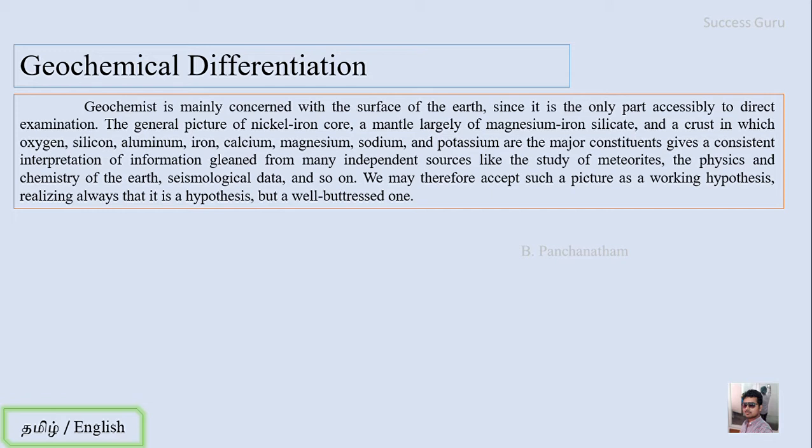aluminium, iron, calcium, magnesium, sodium and potassium are the major constituents. This gives a consistent interpretation of information gleaned from many independent sources like the study of meteorites, the physics and chemistry of the earth, seismological data and so on. We can therefore accept such a picture as a working hypothesis, realizing always that it is a hypothesis but a well-buttressed one.